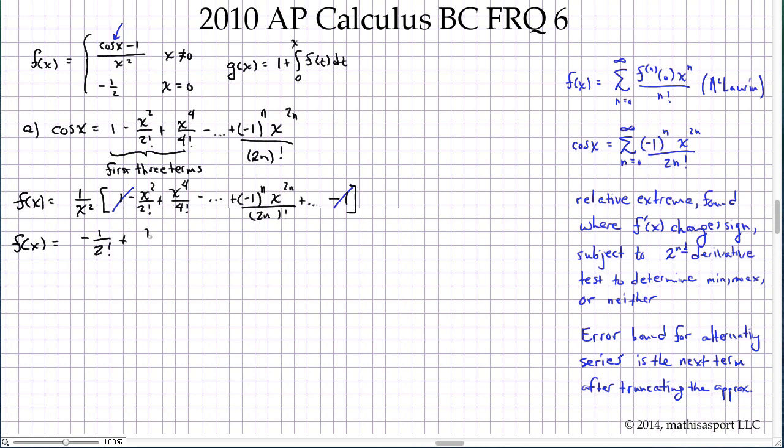So f(x) equals negative 1 over 2 factorial, plus x squared over 4 factorial, and so on, until we get to negative 1 to the n, x to the 2n minus 2 over 2n factorial. They asked for the first three terms, so we need one more term: plus x to the 4th over 6 factorial, and so f(x) is negative 1 half plus x squared over 4 factorial minus x to the 4th over 6 factorial plus dot dot dot.